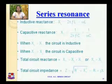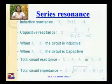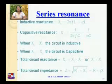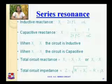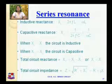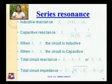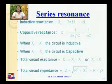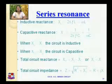When XL is greater than XC, the circuit is known as an inductive circuit. When XC is greater than XL, the circuit is known as a capacitive circuit. Total circuit reactance XT is equal to XL minus XC for an inductive circuit, or XC minus XL for a capacitive circuit. The total circuit impedance Z is equal to the square root of R squared plus XT squared, or R plus j·XT, where XT is the net reactance of the circuit.